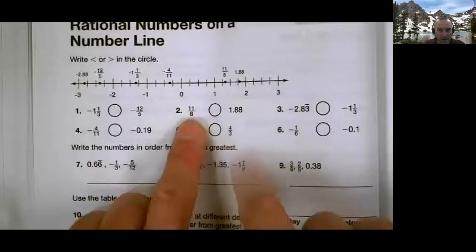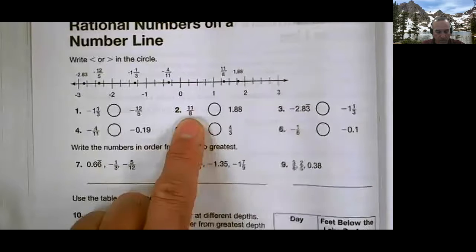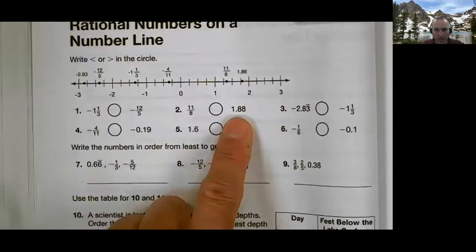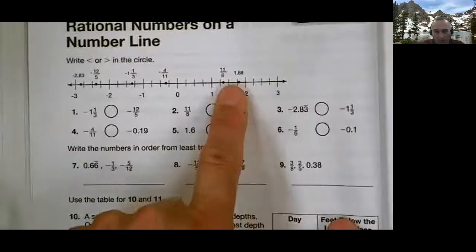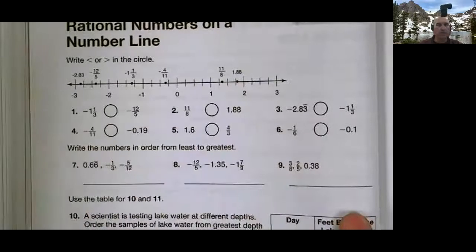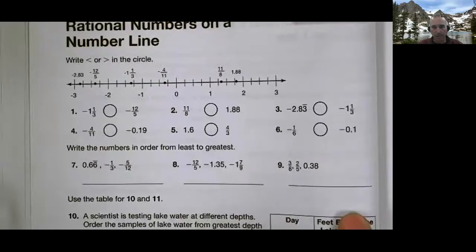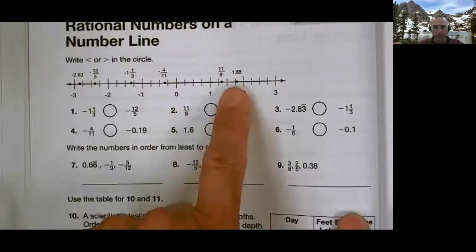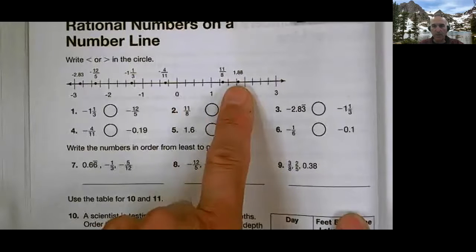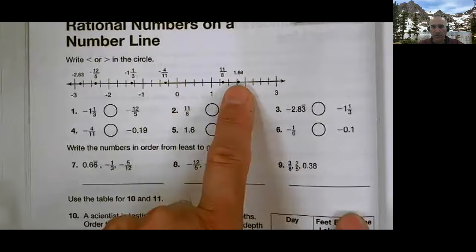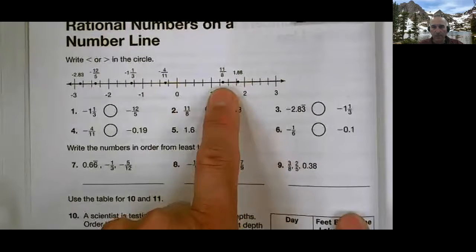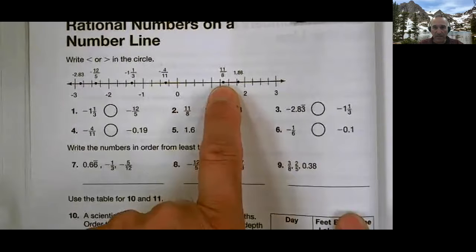Let's do another one. First, visually. Visually using the number line. Look, I have eleven-eighths and 1.88. Visually, here they are on the number line. Let me hit autofocus. It's blurry. There we go. Better. Here are the two values. And in an instant, you can go, well, 1.88 is larger because it's further to the right on the number line compared to that one. Eleven-eighths, that is smaller.